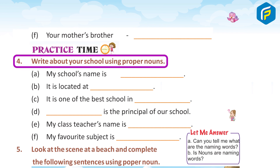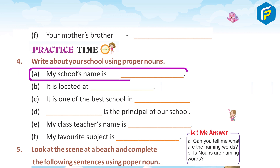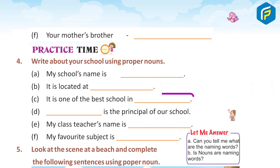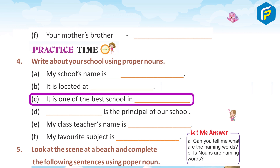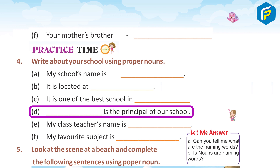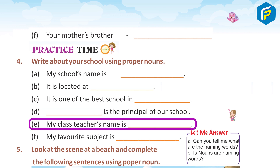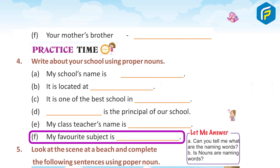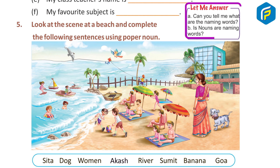Practice Time. Exercise 4: Write about your school using proper nouns. A. My school name is ___. B. It is located at ___. C. It is one of the best schools in ___. D. ___ is the principal of our school. E. My class teacher's name is ___. F. My favorite subject is ___. Answer: Do it yourself.